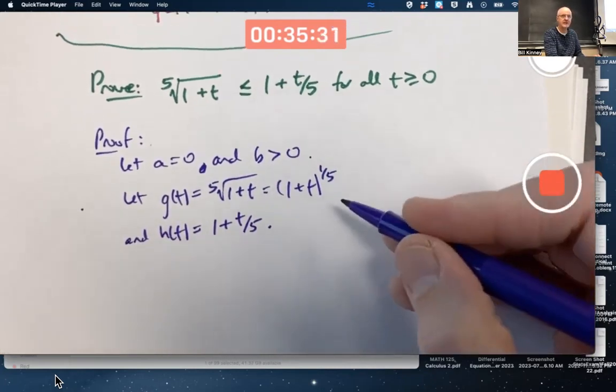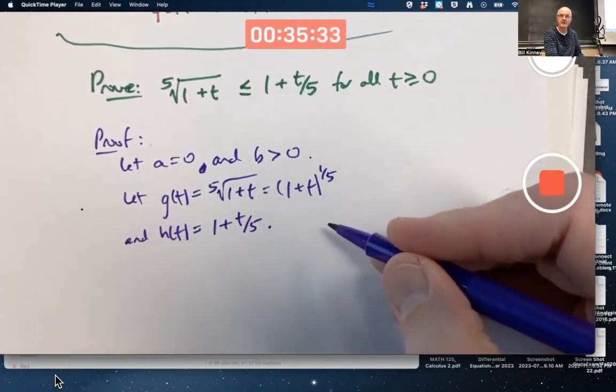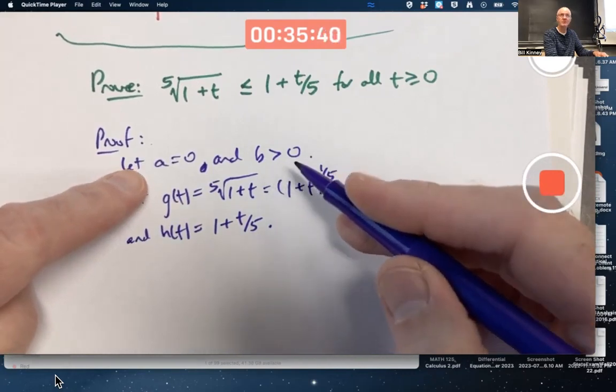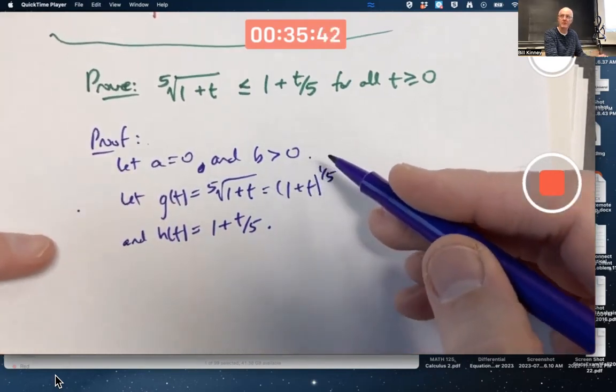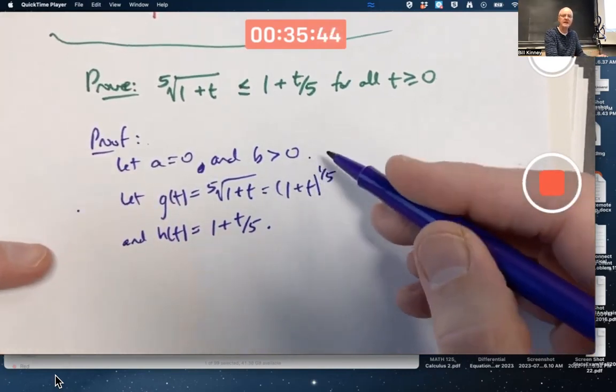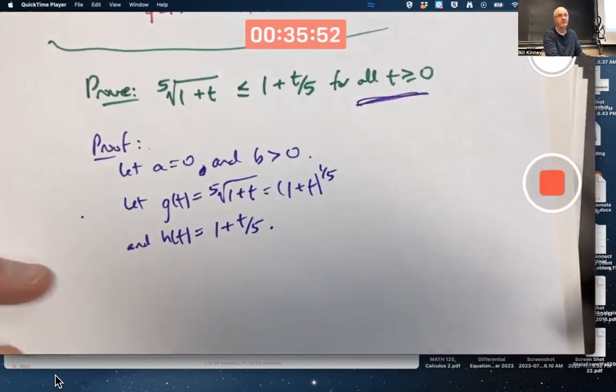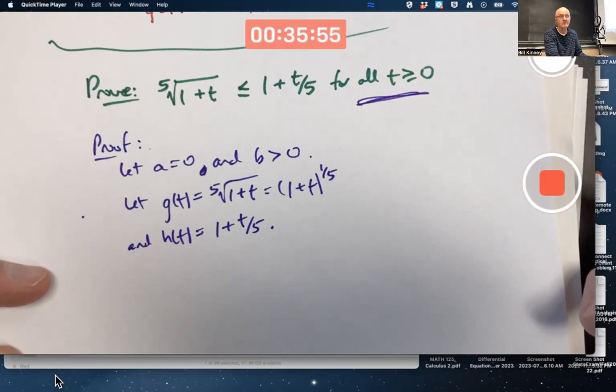I'm trying to show g(t) is always less than or equal to h(t), which is the conclusion of that first bullet of the racetrack principle, over the interval from a to b where a is zero and b is some unspecified positive number. And the fact that b is an arbitrary unspecified positive number means that if I can do it over the interval from a to b, it'll be true for all t greater than or equal to zero, because b is an arbitrary positive number. I'm not saying what it is.